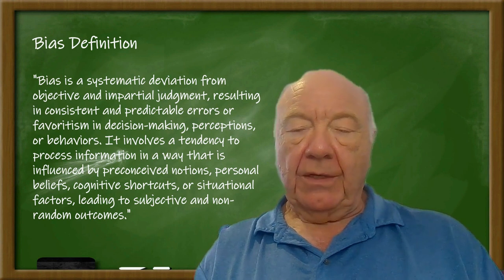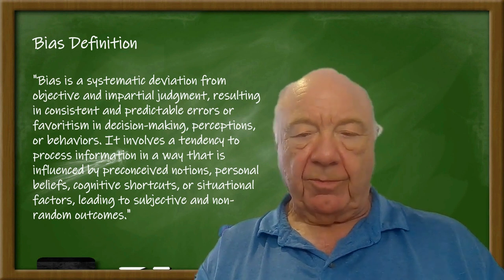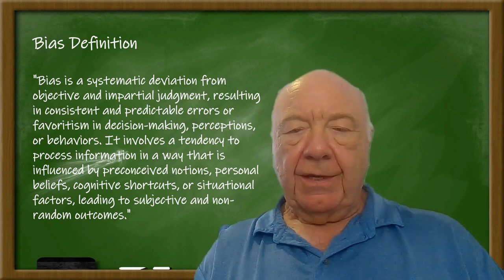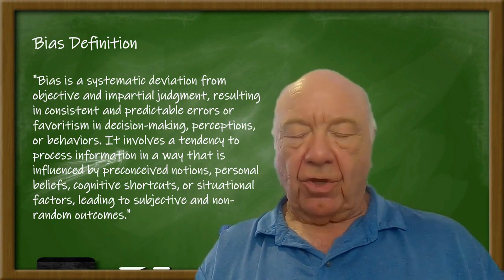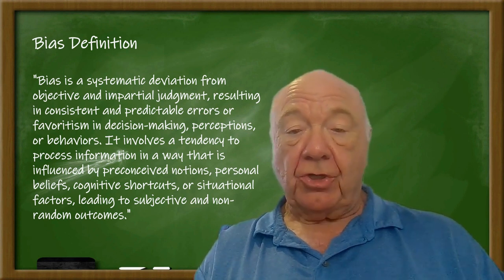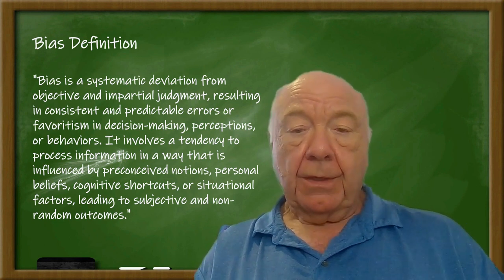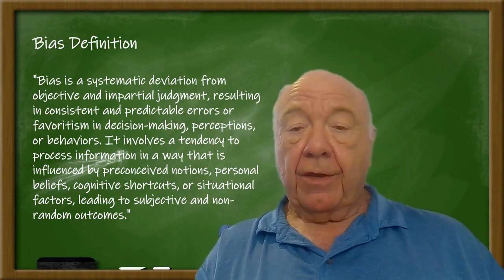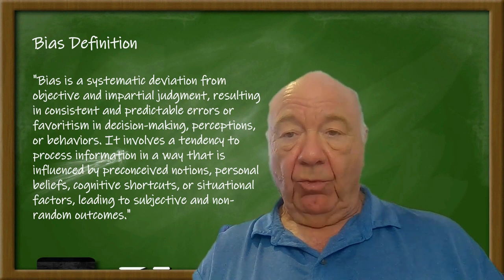Bias is systematic — it's going to happen every time you deal with a problem. It's not a one-off like a random error. Unaccounted for, it is likely to cause errors. But if you get it right, it's actually going to be a shortcut to the correct judgment — a heuristic. When everything's going well, that heuristic will save time and trouble, but when it's not working, it will lead you to be wrong.